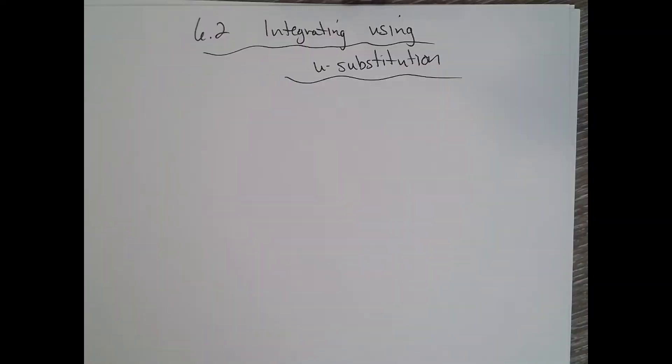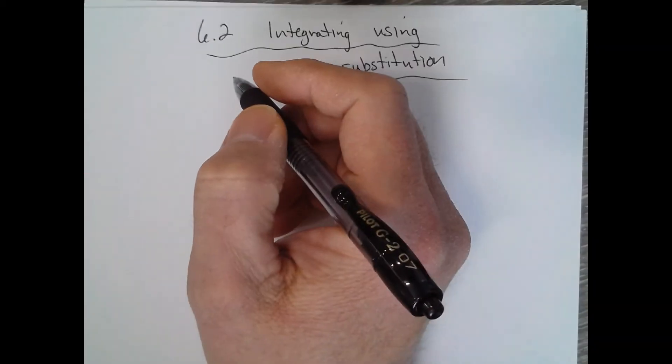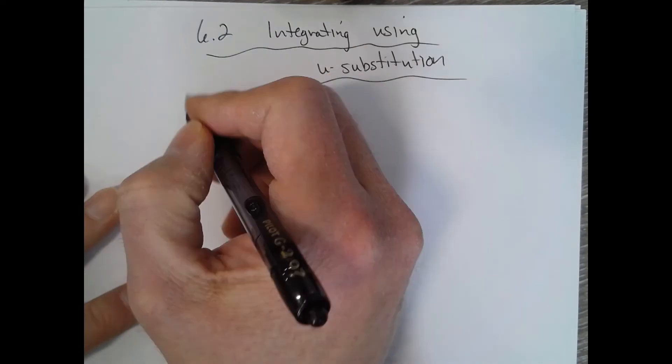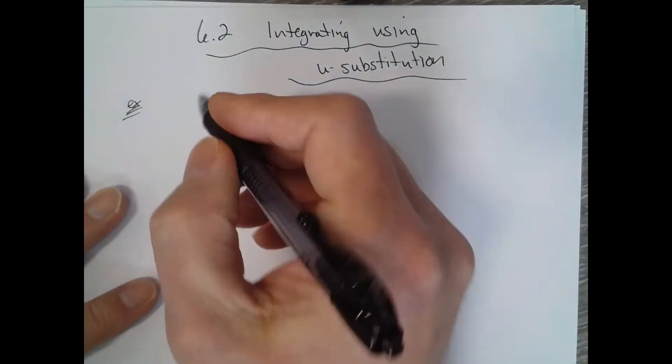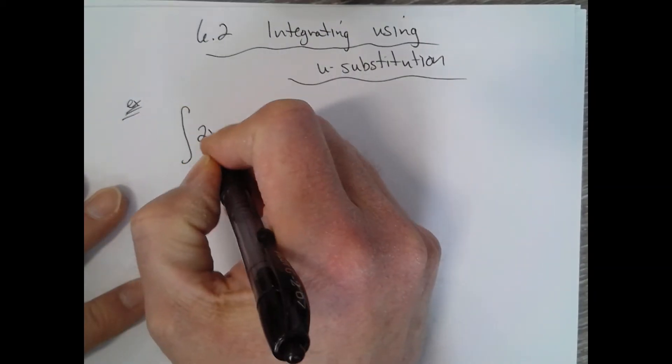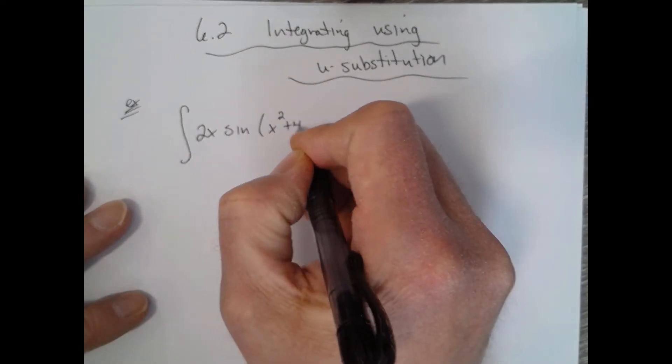U-substitution is the most popular way to evaluate integrals. Generally speaking, it's the first thing you could try when you're trying to figure out what the anti-derivative is. I'll give you some examples, and it's going to become more evident what you should choose your u to be. But that's oftentimes the most difficult part, trying to figure out what to use for u.